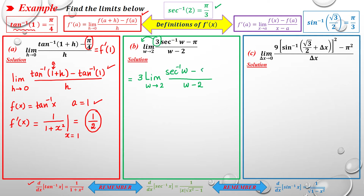So this becomes the limit of [arcsec(w) - arcsec(2)] / (w - 2) as w→2. This matches the second definition of the derivative, with f(x) = arcsec(x) and a = 2, since we have 2 in the numerator and 2 in the denominator.